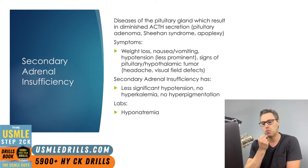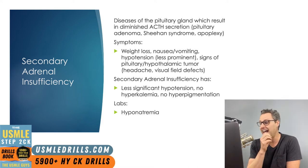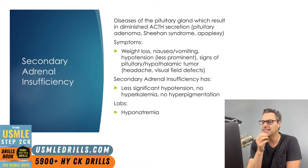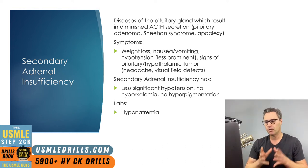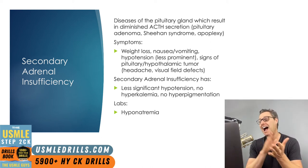Patients with secondary adrenal insufficiency frequently report weight loss, nausea, and vomiting, and they may be hypotensive, but to a much lesser degree than in primary adrenal insufficiency. Because ACTH is diminished in secondary adrenal insufficiency, patients will not have hyperpigmentation. You'll also see less significant hypotension and no hyperkalemia — these are telltale clues to distinguish primary from secondary. Hyponatremia due to increased ADH compensating for hypotension is also expected. There is also the potential for tertiary adrenal insufficiency, caused by chronic high-dose glucocorticoid therapy.